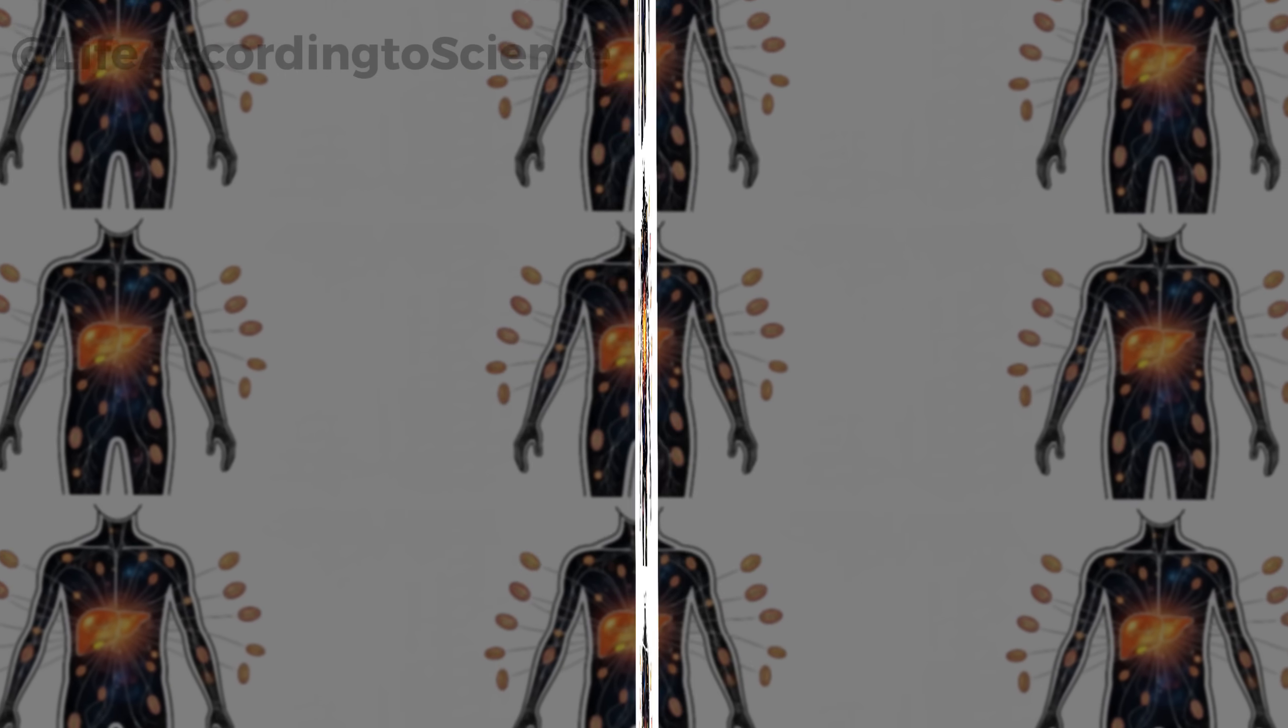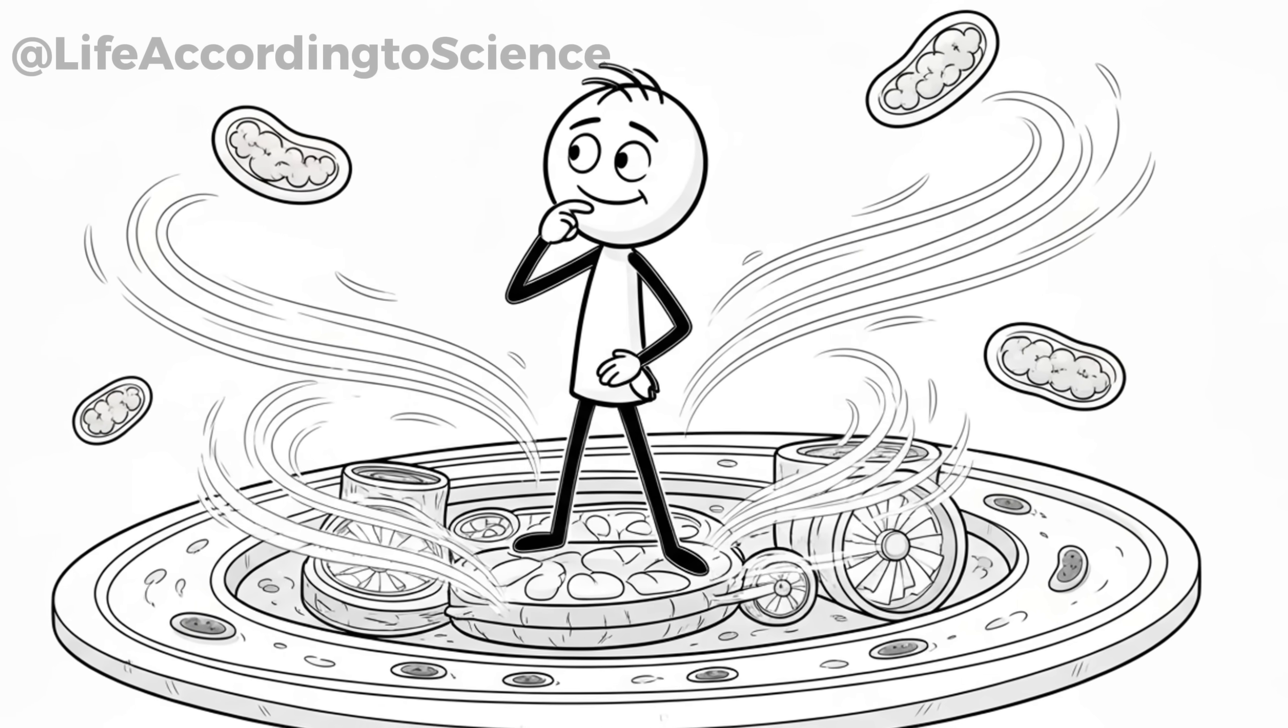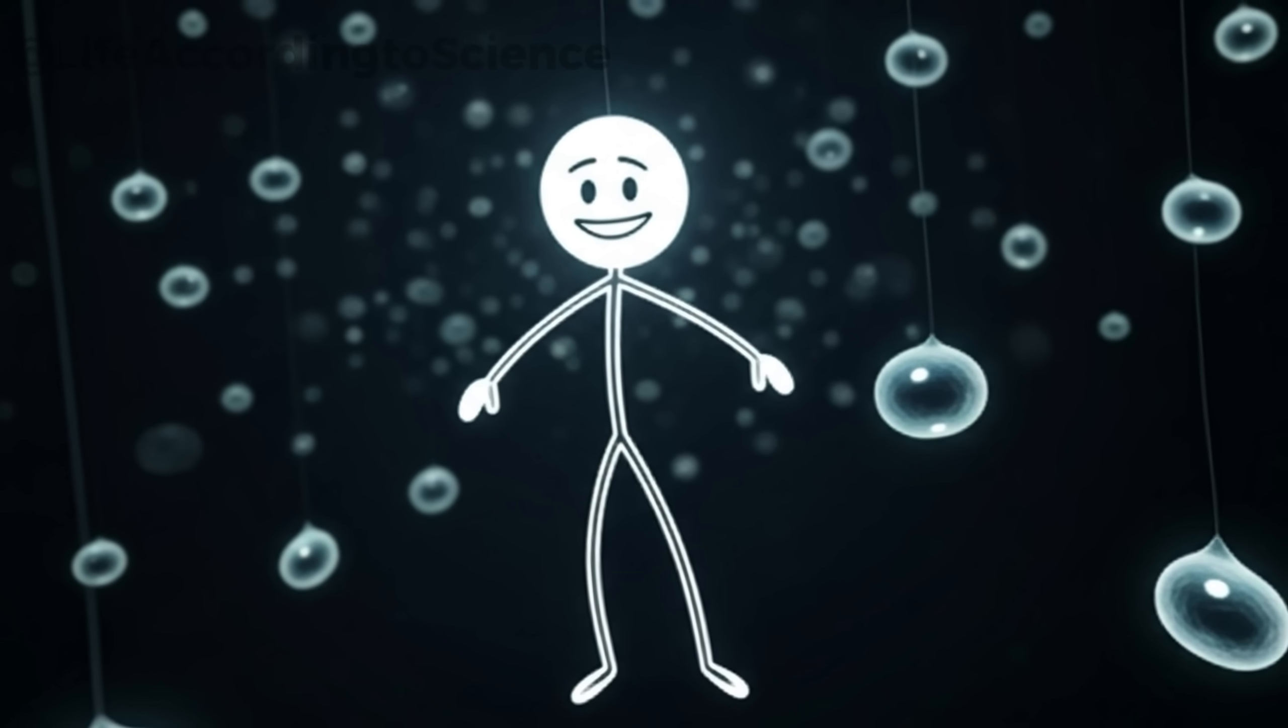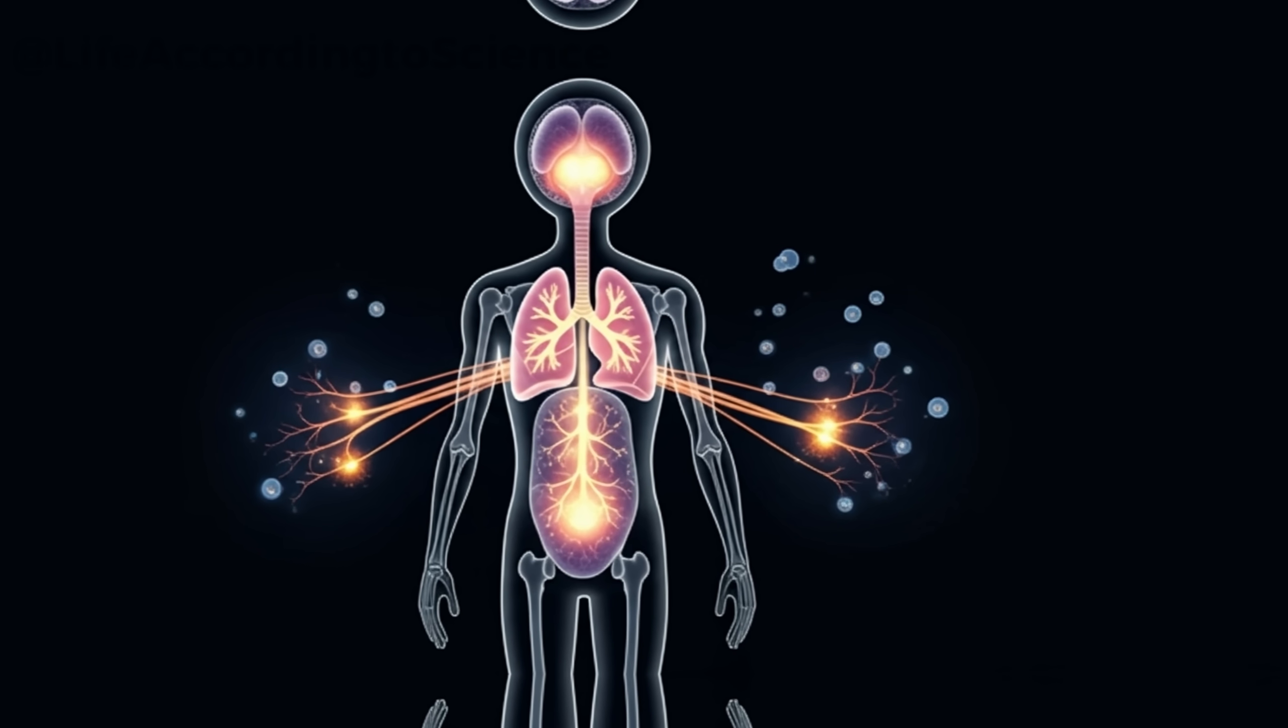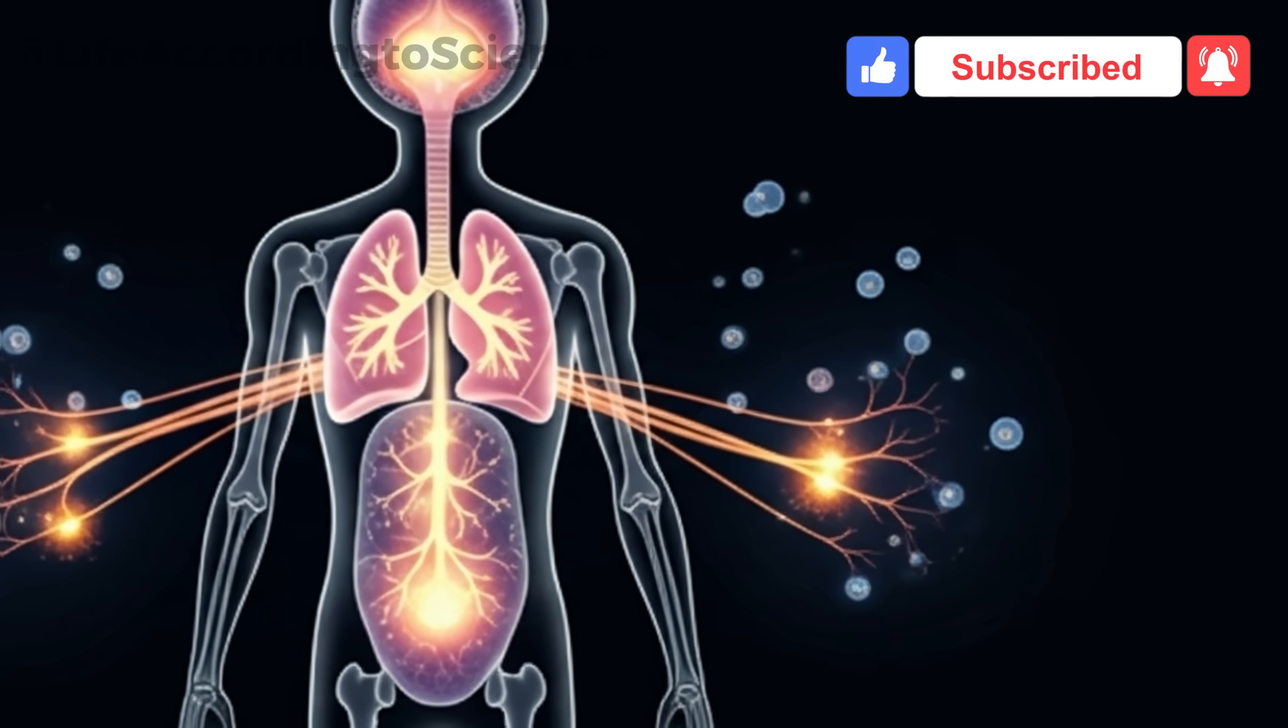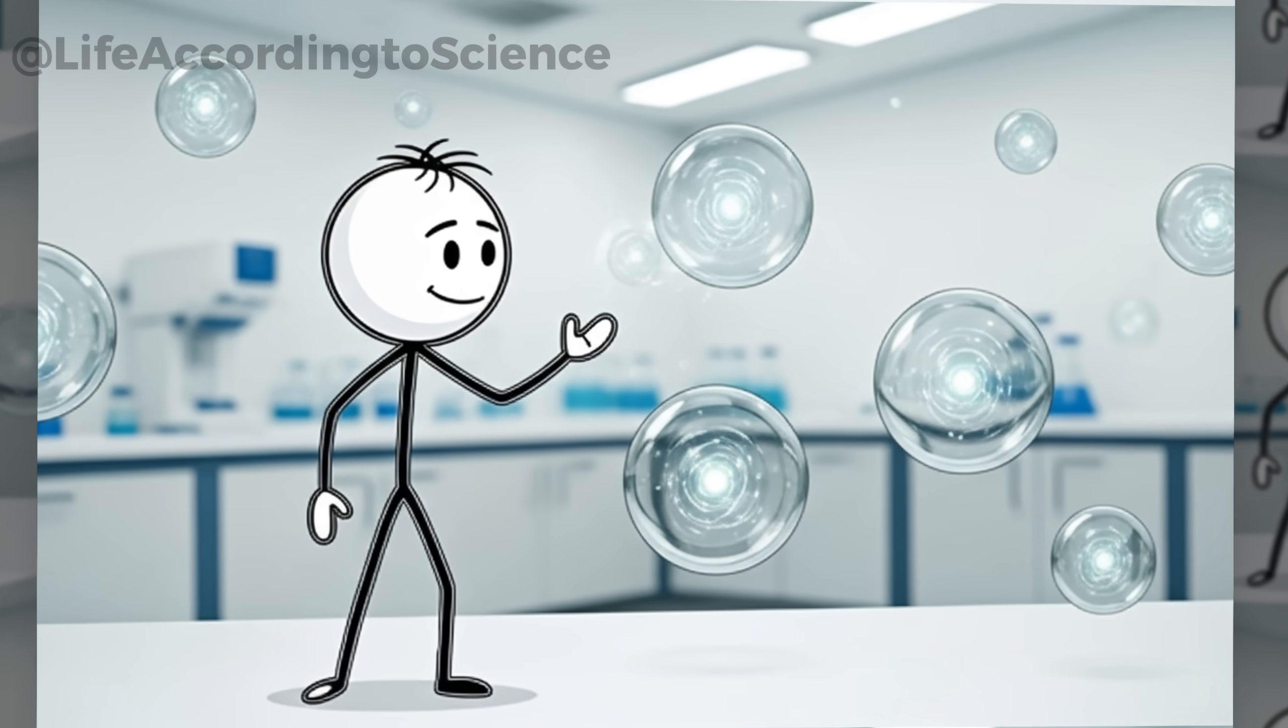Inside each cell, tiny structures called mitochondria act like power plants. During fasting, they are forced to become more efficient, squeezing every drop of energy from what little fuel is left. This microscopic adaptation is part of why fasting has been studied for its potential longevity benefits. Cells begin to adjust their breathing, a process known as cellular respiration. Without a constant flood of glucose, they switch to burning fat-derived molecules, which creates less oxidative stress compared to sugar metabolism. This means your cells are essentially working cleaner, with fewer waste products.